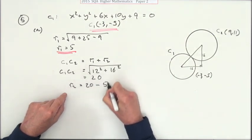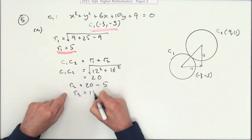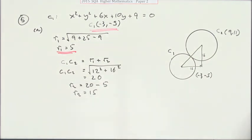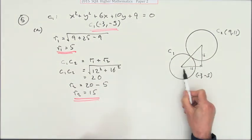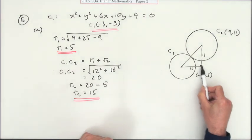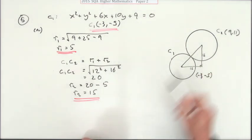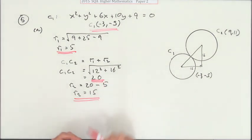That means that r2 is going to be 20 minus the 5, so r2 is going to be 15 units. These numbers are going to be handy because that tells you how to move from C1 to C2, tells you the steps you need to make, because that's the important bit, the distance between the centers.